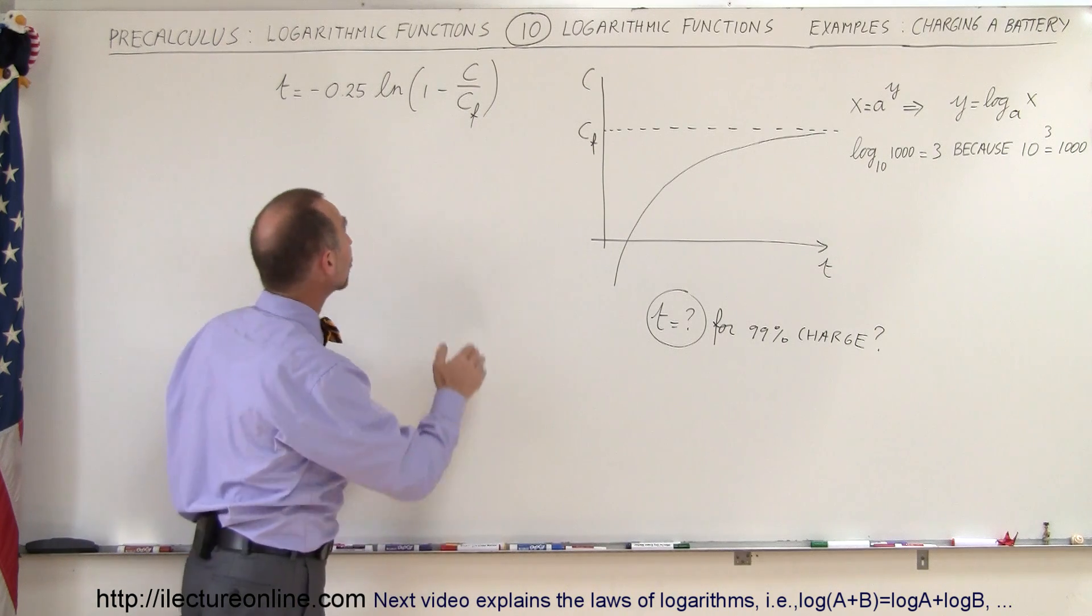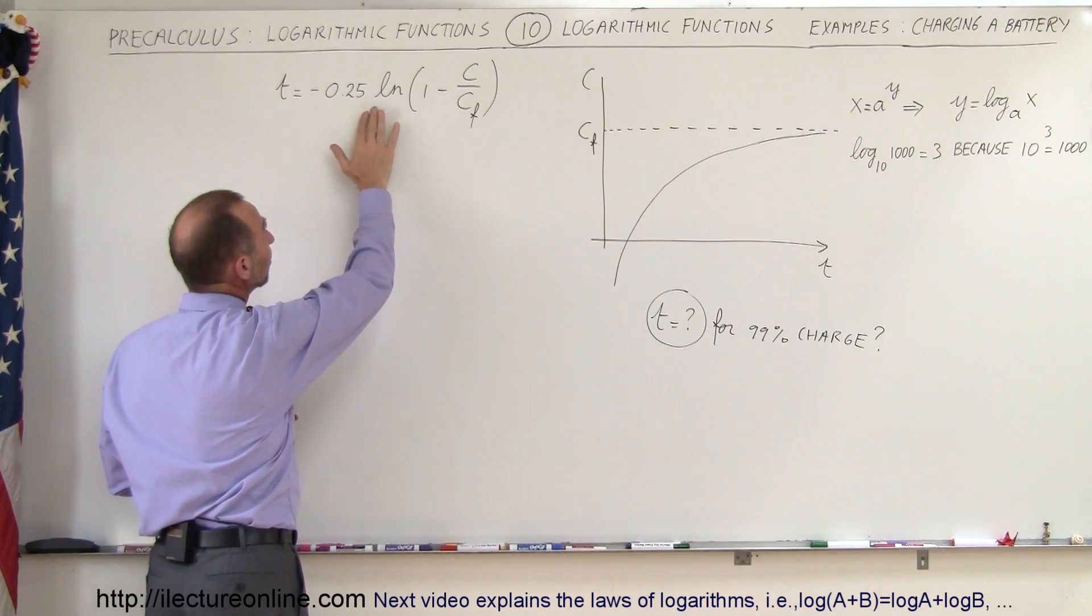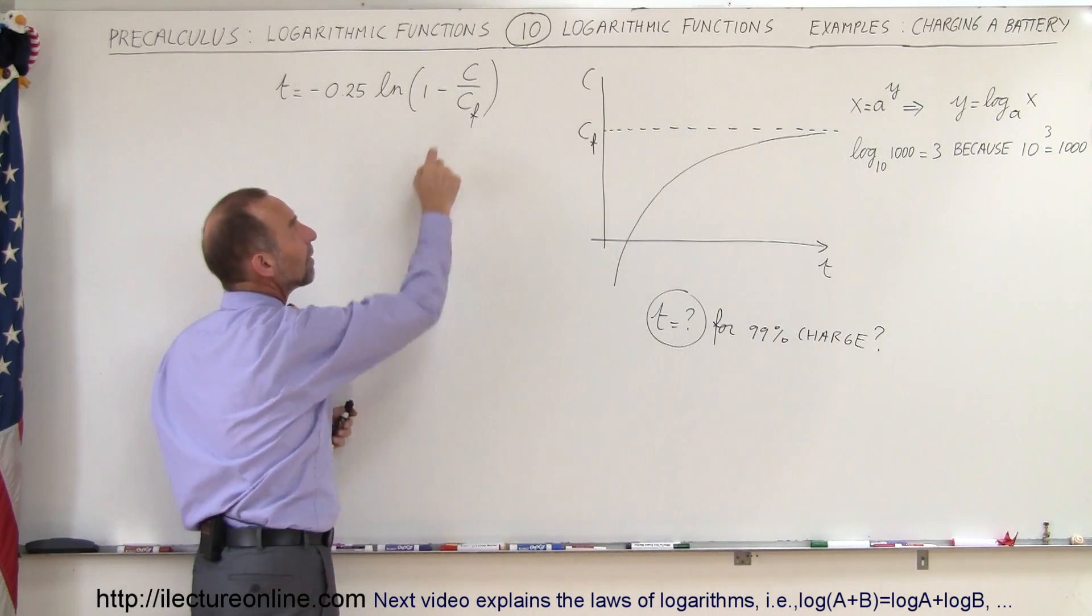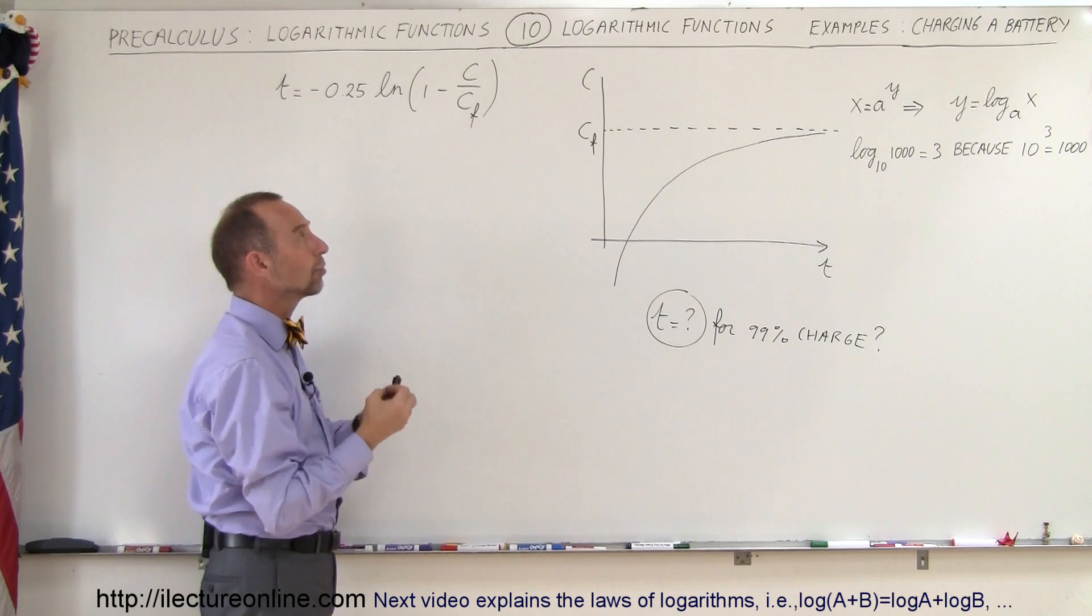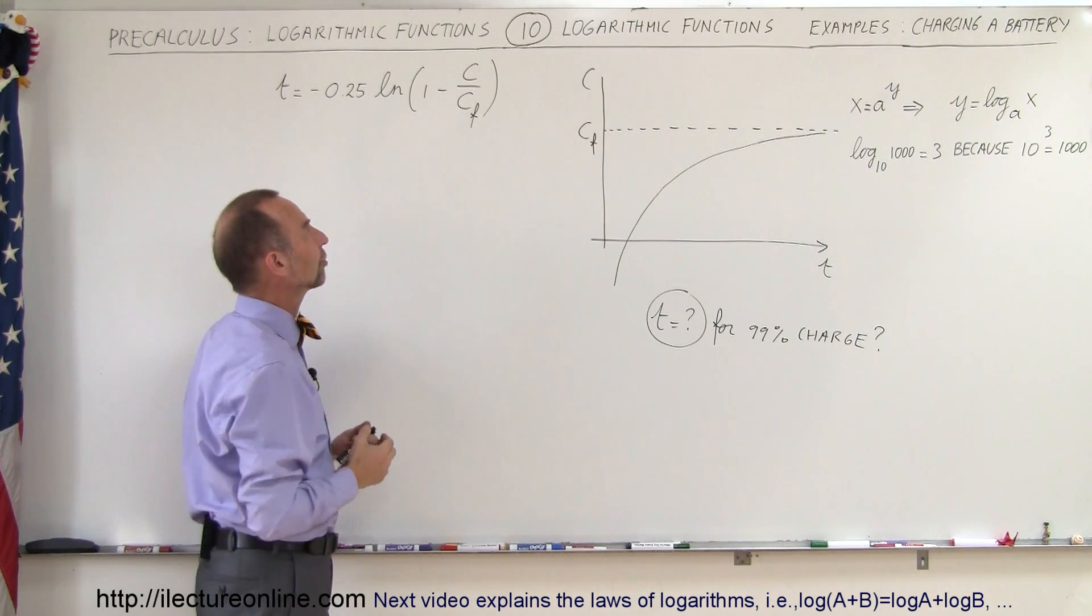The equation we use is as follows: the time that it takes is equal to some negative constant times the natural log of 1 minus c over c_f. c_f is the final charge that you want to reach, and c is the charge as a function of time.